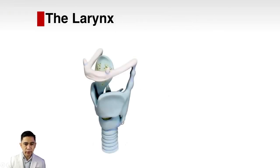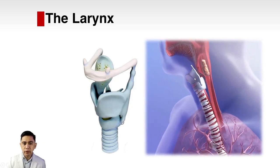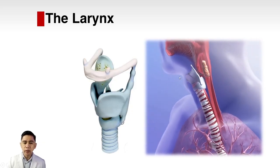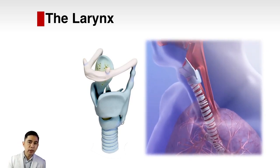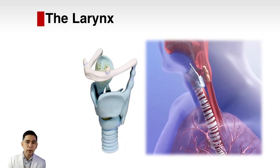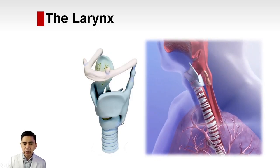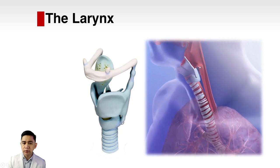The larynx is sometimes called the laryngeal complex because it has many parts — cartilages, muscles, and spaces. The larynx is found in the neck, just underneath the skin and muscles. Sometimes you can see it in skinny individuals, especially when they swallow. The larynx is above the trachea and just anterior to the entrance of the esophagus.